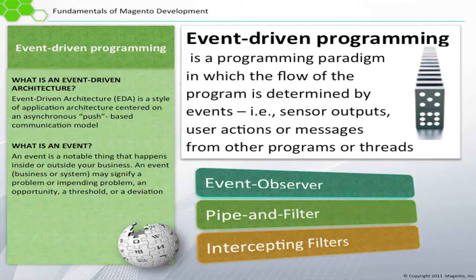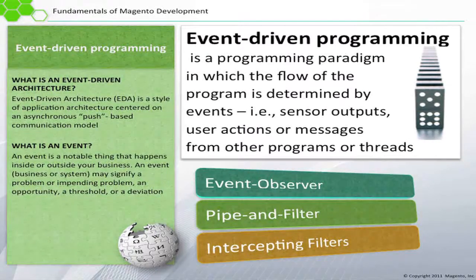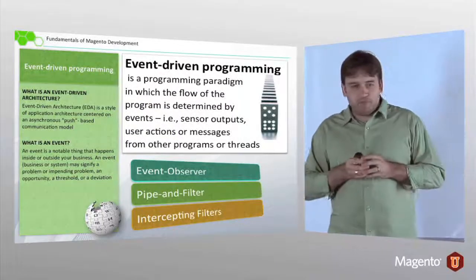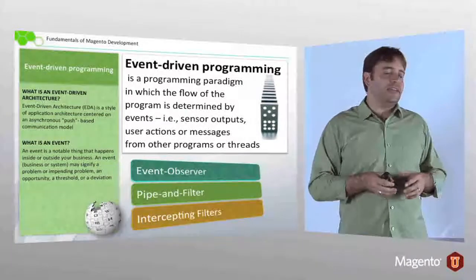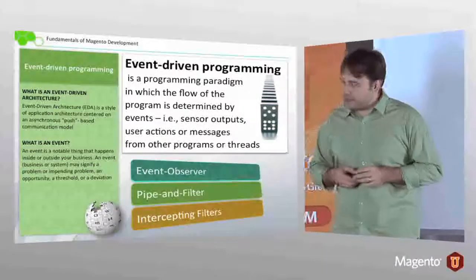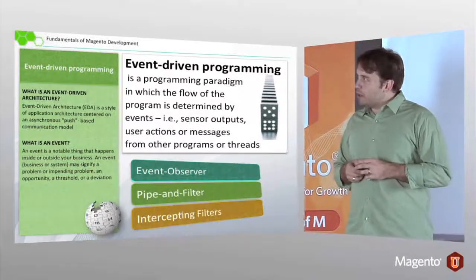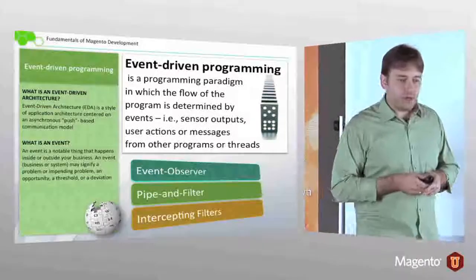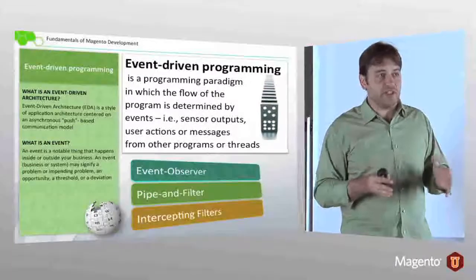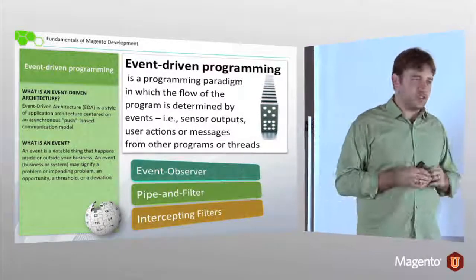The basic players in event-driven architecture — in Magento anyway — are the event, which is the thing that happens, as well as the observer, which is something that's actually watching it happen. With observers, you get access to that point in the code that you really need access to, regardless of anything else that's going on.